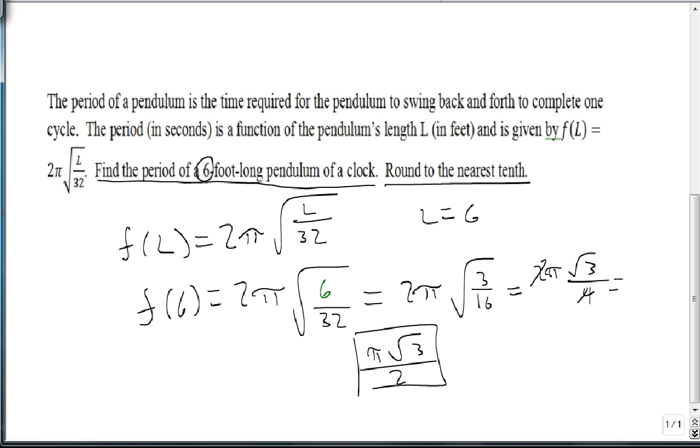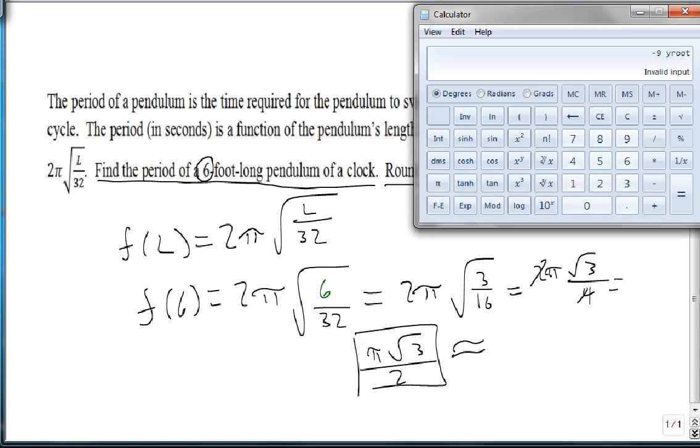Here's our exact answer, but to round to the nearest tenth means that we need a calculator. We take pi times the square root of 3 divided by 2